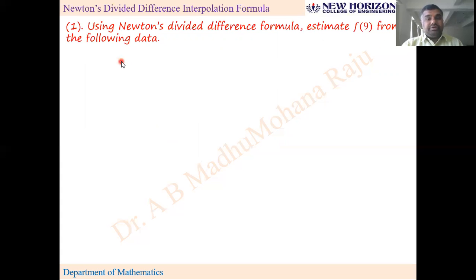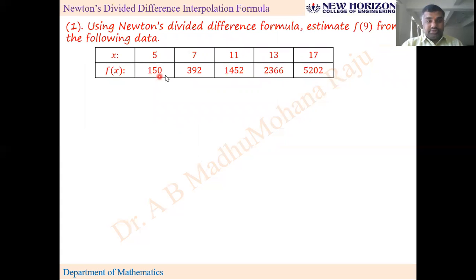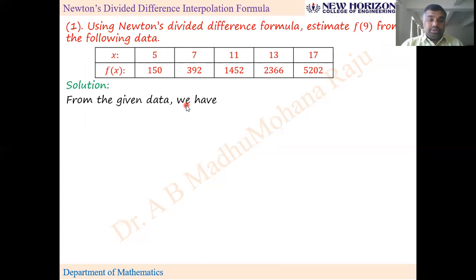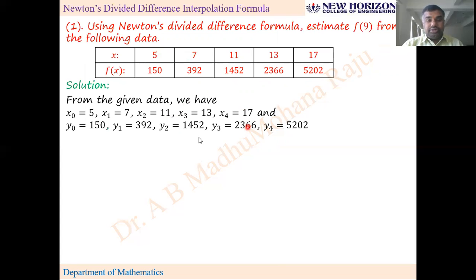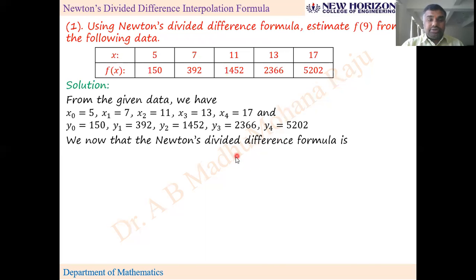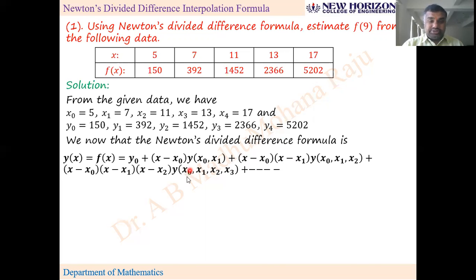Problem: Using Newton's divided difference formula, estimate f(9) from the following data. The x values 5, 7, 11, 13, 17 are not equally spaced. From the given data we identify x₀, x₁, x₂, x₃, x₄ and corresponding y₀, y₁, y₂, y₃, y₄.